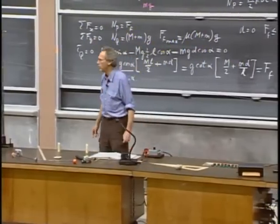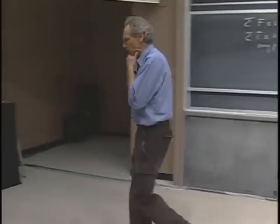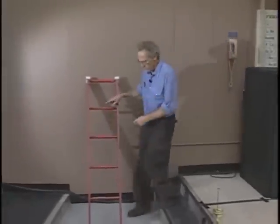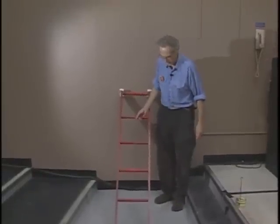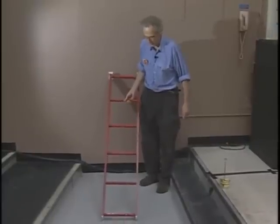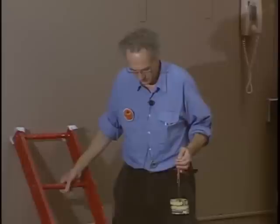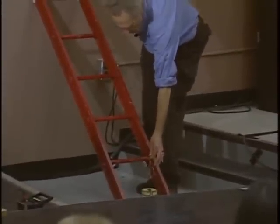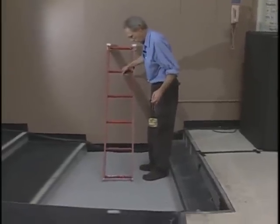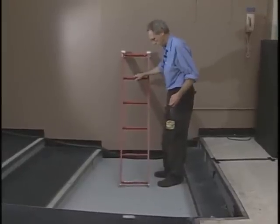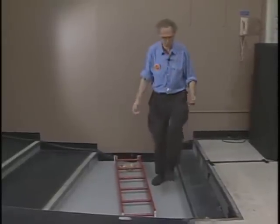I can demonstrate this. I set the angle alpha a little lower than critical so we can all see it will slide. It's past the critical angle. Now I put four kilograms at the bottom — you see it was unstable, and now with the four kilograms on it I can let go and the ladder is stable. Take the weight off — there it goes. Now I make alpha a little larger than critical so the ladder is happy. But now I move the weight up — and as you see, it slides. That's exactly what the analysis showed.